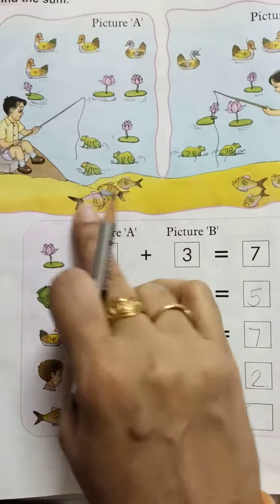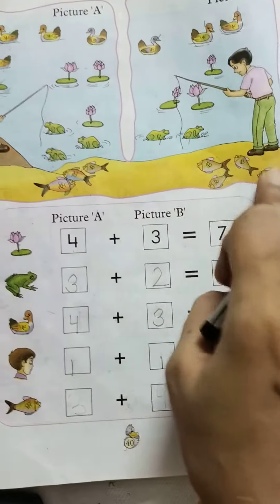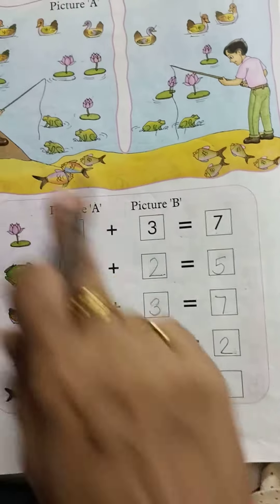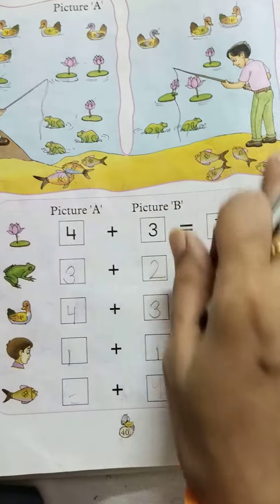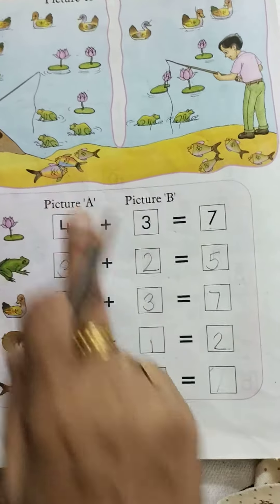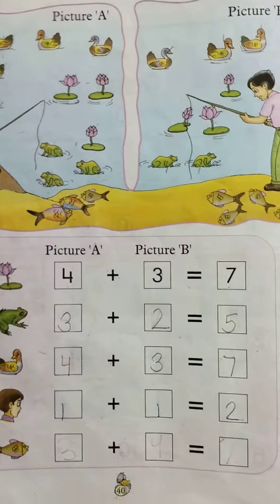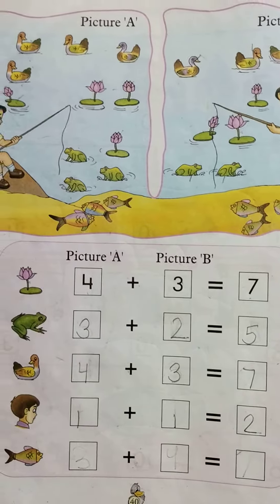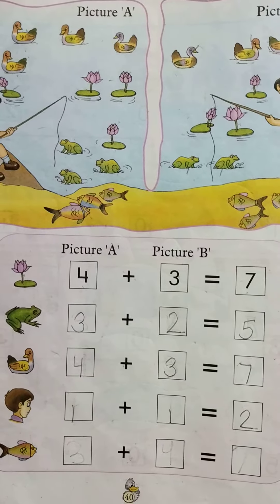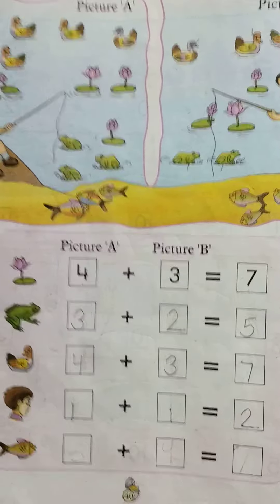Now you will write here number two. Picture A how many? Picture B how many? So you will write here number two. In this way you will complete page number 40 and you will send the images on my website for checking. Thank you. Have a nice day.